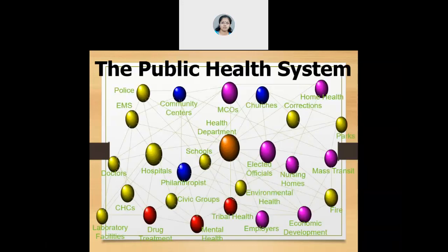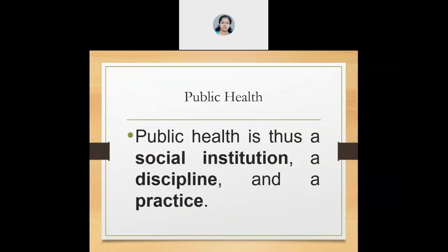When you think about the public health systems, which includes all these diverse actors — hospitals, doctors, community centers, laboratory facilities, mental health, the environmental health dimension, policy makers, religious institutions, community centers, and all kinds of community sectors — we can think of public health as a social institution, a discipline, and a practice.